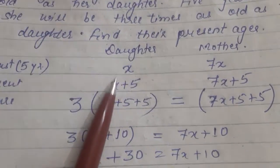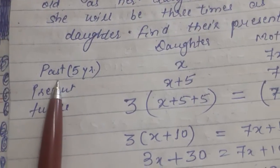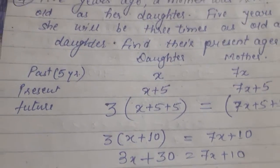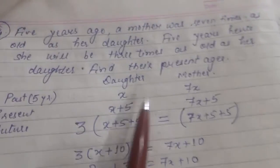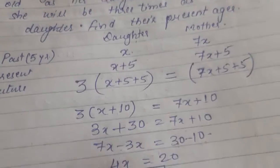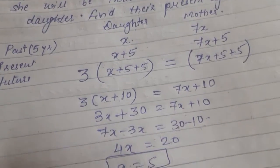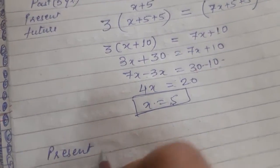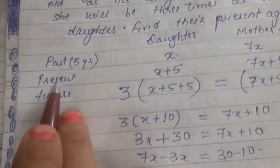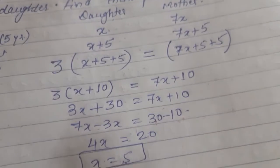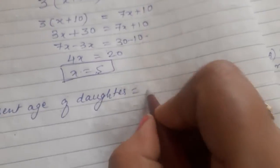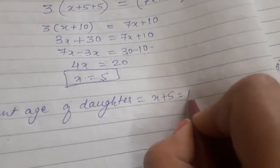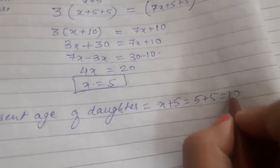So X was our daughter's age five years ago. For the present age, we substitute X equals 5. Present age of daughter is equal to X plus 5, that is 5 plus 5 is equal to 10.